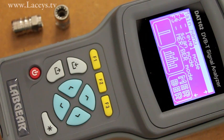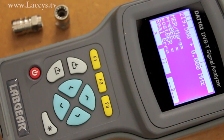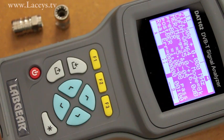MER BER signal quality measurements are provided for digital TV. When DAT 102 has locked your channel, a padlock shaped icon appears in the top right corner of the screen.